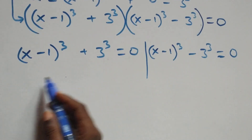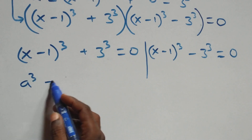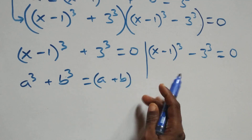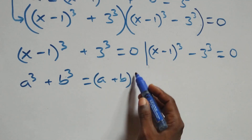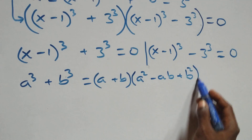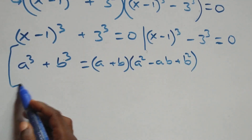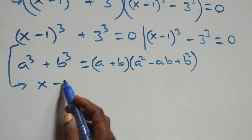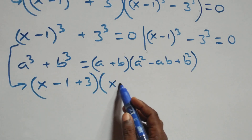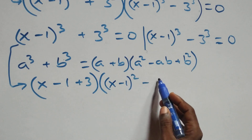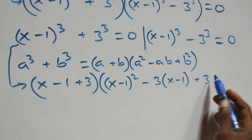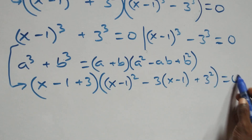Solving Case 1 using the sum of cubes identity: a^3 + b^3 = (a + b)(a^2 - ab + b^2). This gives us (x minus 1 plus 3) times (x minus 1 all squared minus 3 times (x minus 1) plus 3 squared) equals 0.